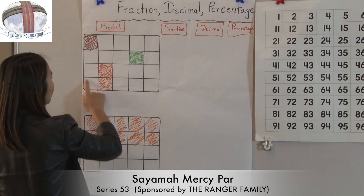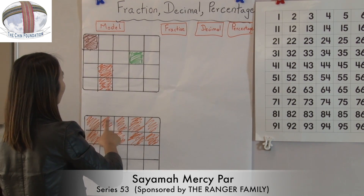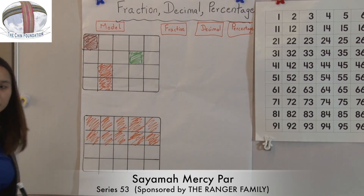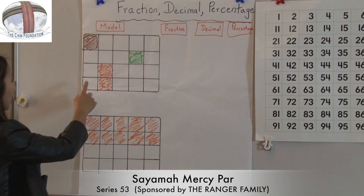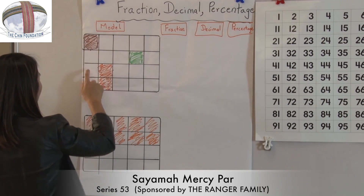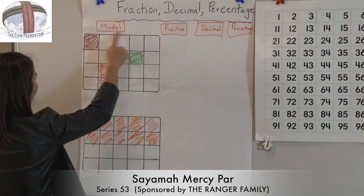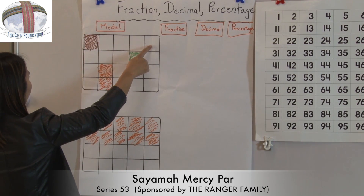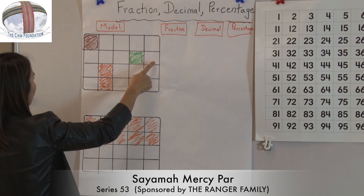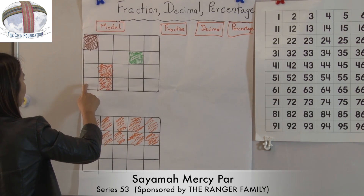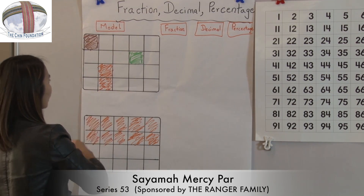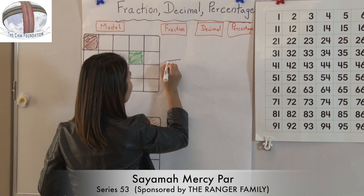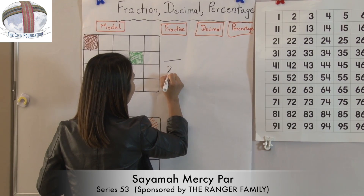So we have this fraction which we can write over here. In order to write a fraction, we have to count how many boxes in all first. So I will count: 1, 2, 3, 4, 5, 6, 7, 8, 9, 10, 11, 12, 13, 14, 15, 16, 18, 19, 20. So my 20 is my denominator.